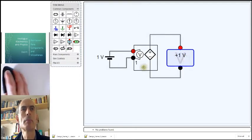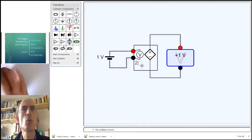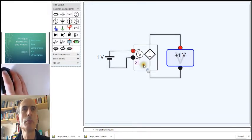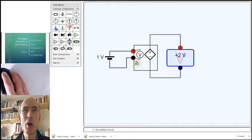1 volt. But if I change the scale factor, if I change what this voltage-dependent voltage source does by moving this to a 2, then what this component does is it puts a voltage between its output terminals, which is twice the voltage between its input terminals. Or it could be five times the voltage between its input terminals, and so on.